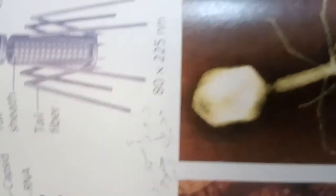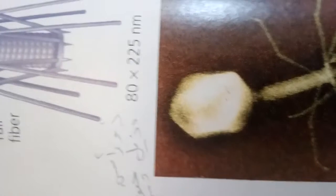The first phages studied included seven that infect E. coli. These phages were named type one T1, type two T2, and so forth, in the order of their discovery. The three T-even phages T2, T4, and T6 turned out to be very similar in structure.